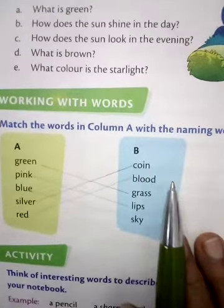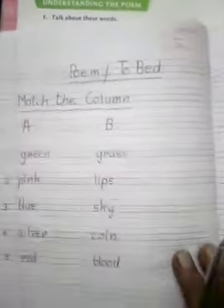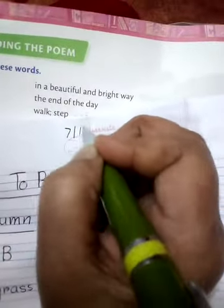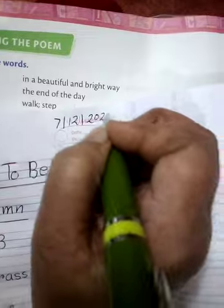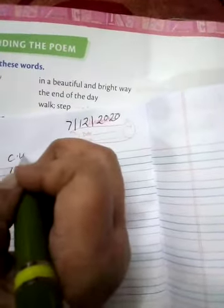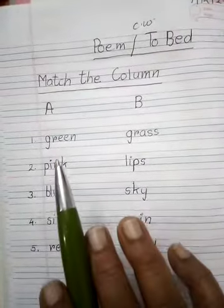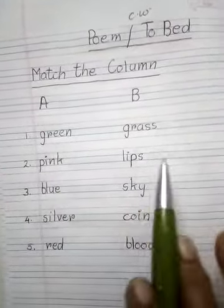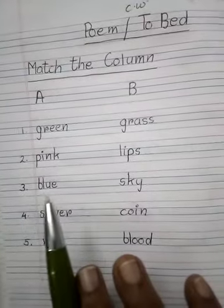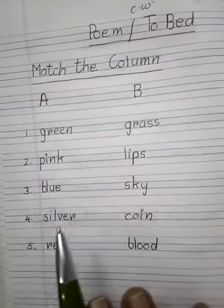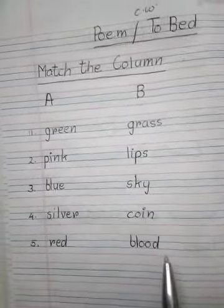You match it in your book and note it down in your notebook. First put date 7-12-2020, classwork, poem 'To Bed', match the column A and B. Green, grass. Pink, lip. Blue, sky. Silver, coin. Red, black.